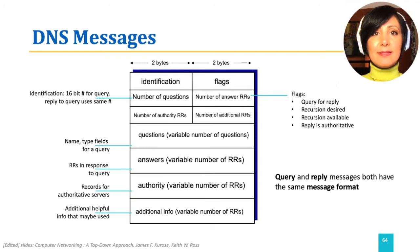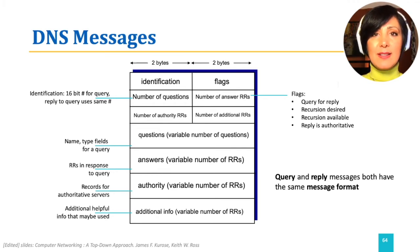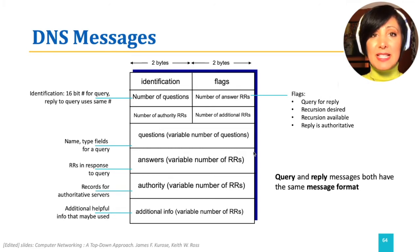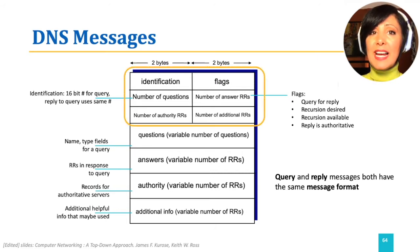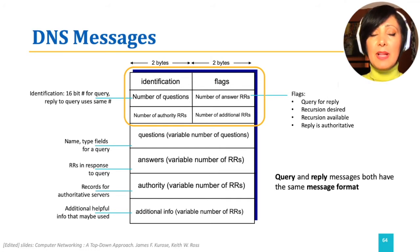The resource records are exchanged among hosts through DNS messages. DNS messages have two types: query and reply messages. Both of these messages follow the same message format. The first 12 bytes of the message is the header section. There are a number of control flags in the header, the most important of which is the query-reply flag that indicates if a message is a query message or if it is a reply to a query.